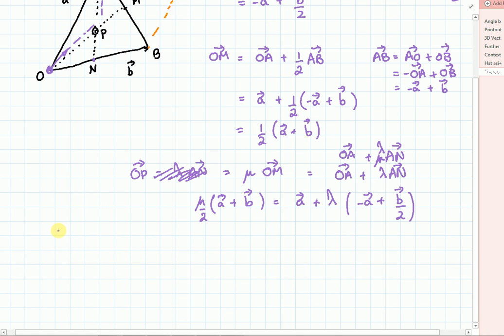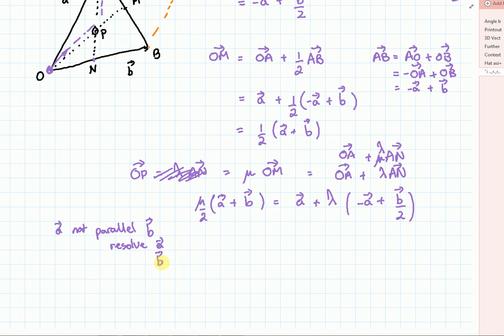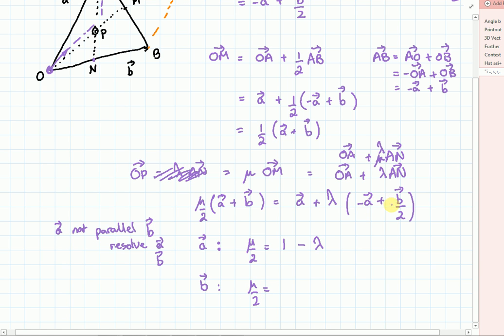And assuming A and B are not parallel, we can resolve in directions A and B separately. And it's a bit like using i and j as separate vectors. Any vector space can be defined by a parallelogram. Or a parallelepiped in three dimensions. So we can equate the vector parts with A. So I've got mu over 2, is equal to 1A minus a lambda. Vector B gives me mu over 2, and that is equal to just lambda over 2.